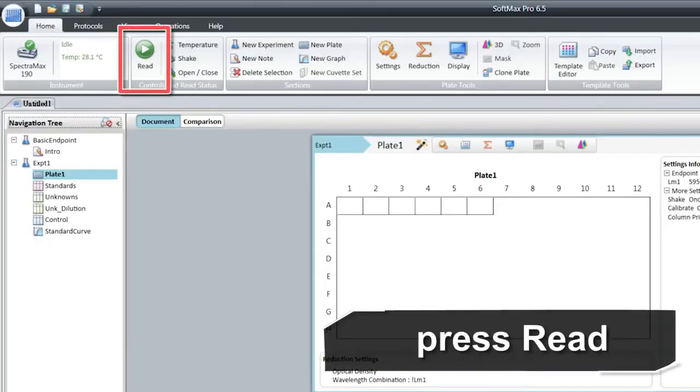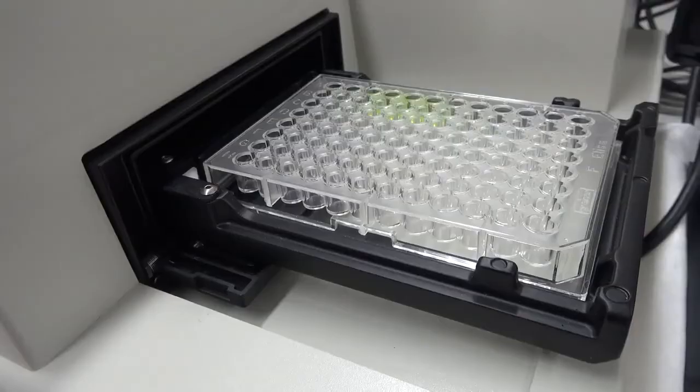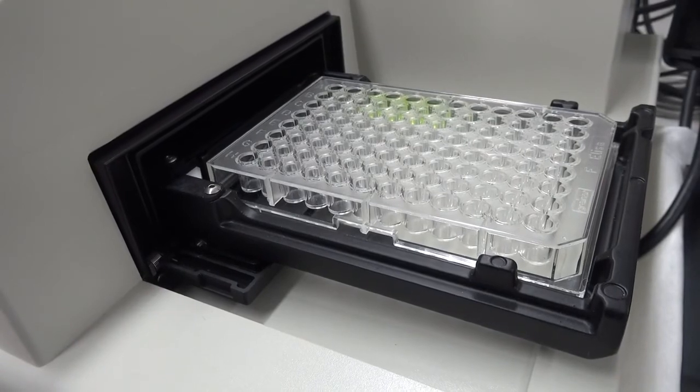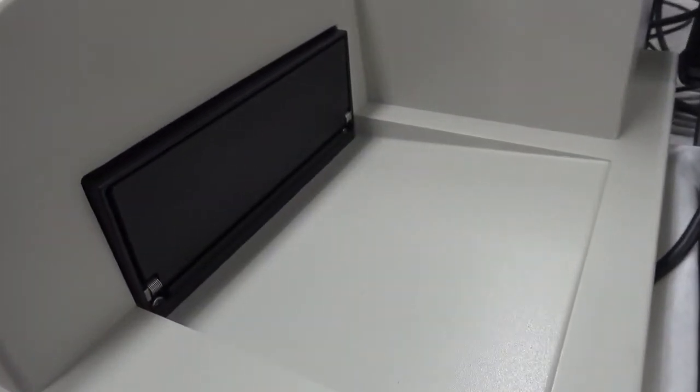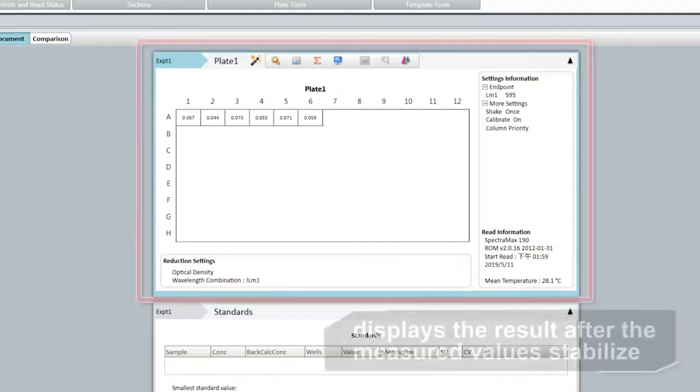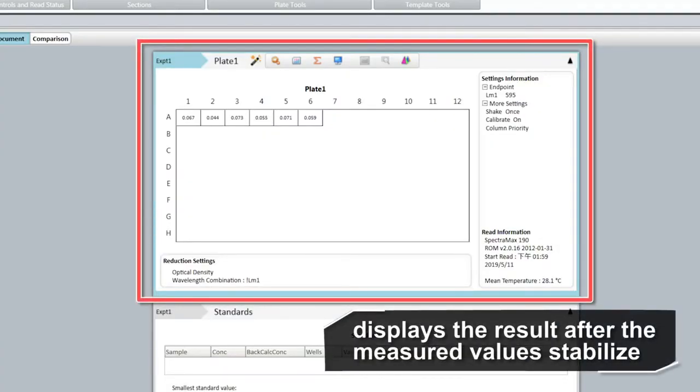Next, press read in control software. The spectrophotometer takes in the microplate automatically and stirs it a few times before measuring. The computer screen displays the result after the measured values stabilize.